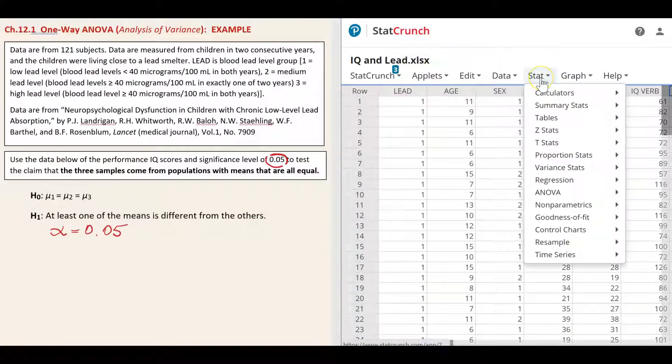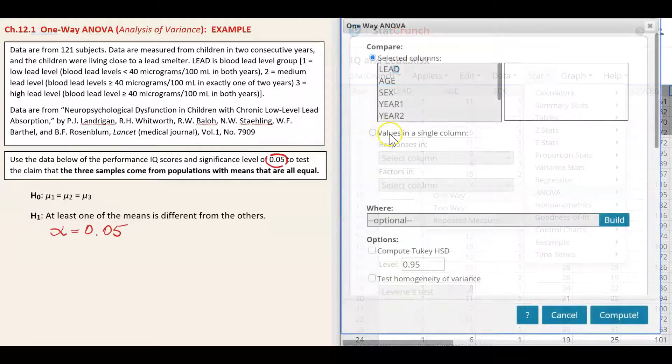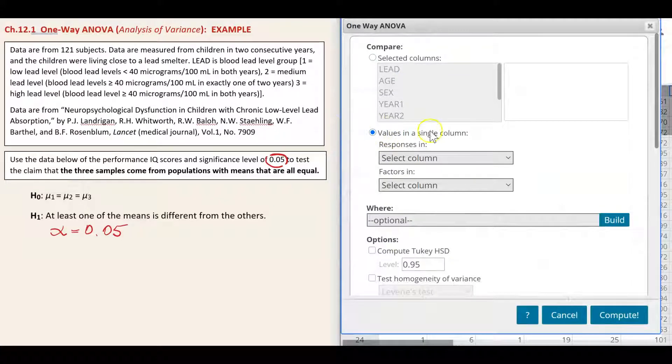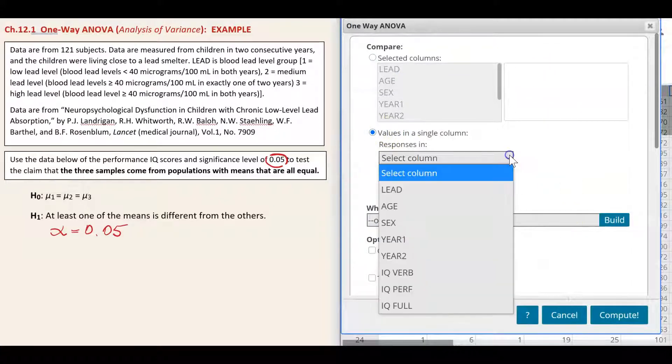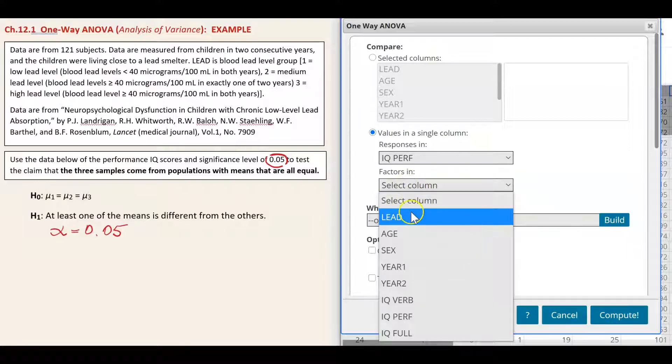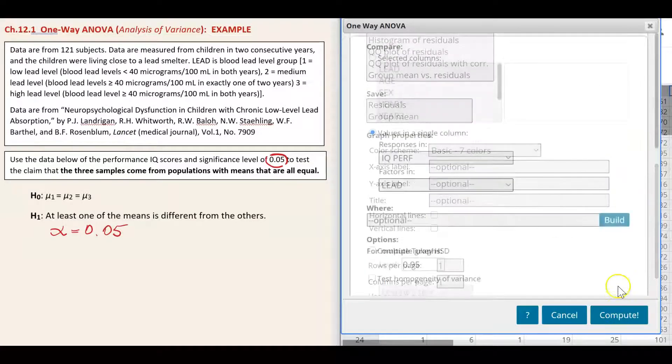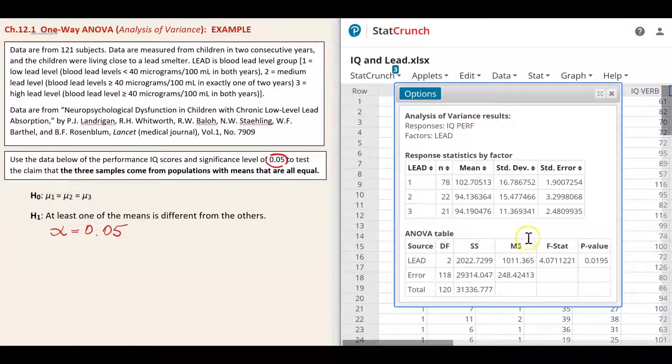Go to stat, ANOVA, one way. Choose values in a single column because all our values are located in the single column IQ performance. Factor in column lead. Leave everything else as it is. Compute. Here are the results.